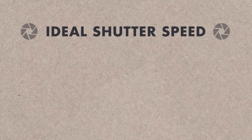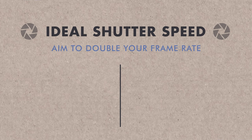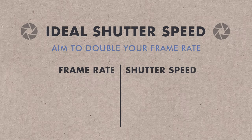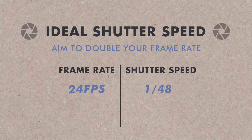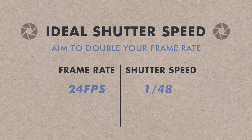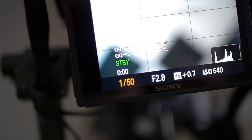Something to think about when shooting in different frame rates: we always want to have our shutter speed double that of our frame rate. So when we're shooting at 24 frames per second we want to aim for 1/48 shutter. This will depend on your camera — it might be 1/50 or even 1/60 depending on what camera you're using — but you want to keep it to double your frame rate.